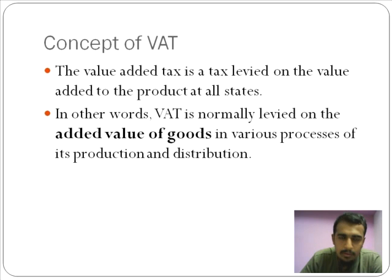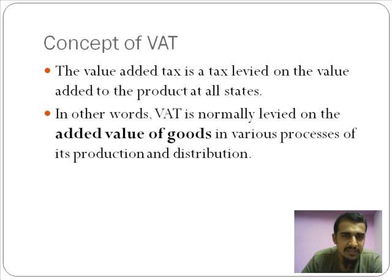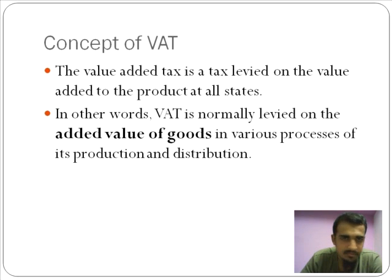Consider cotton textiles as an example. Cotton in its raw form cannot be used as clothing. You need to clean the cotton, bleach it, color it, weave it, and add patterns if required. Only then can you consider it as a t-shirt or a pair of denim. Until you do that, it's nothing but raw cotton. Through a manufacturing process, they are adding value to cotton — that's what you refer to as 'value added', and that's where you apply the tax for this particular concept.